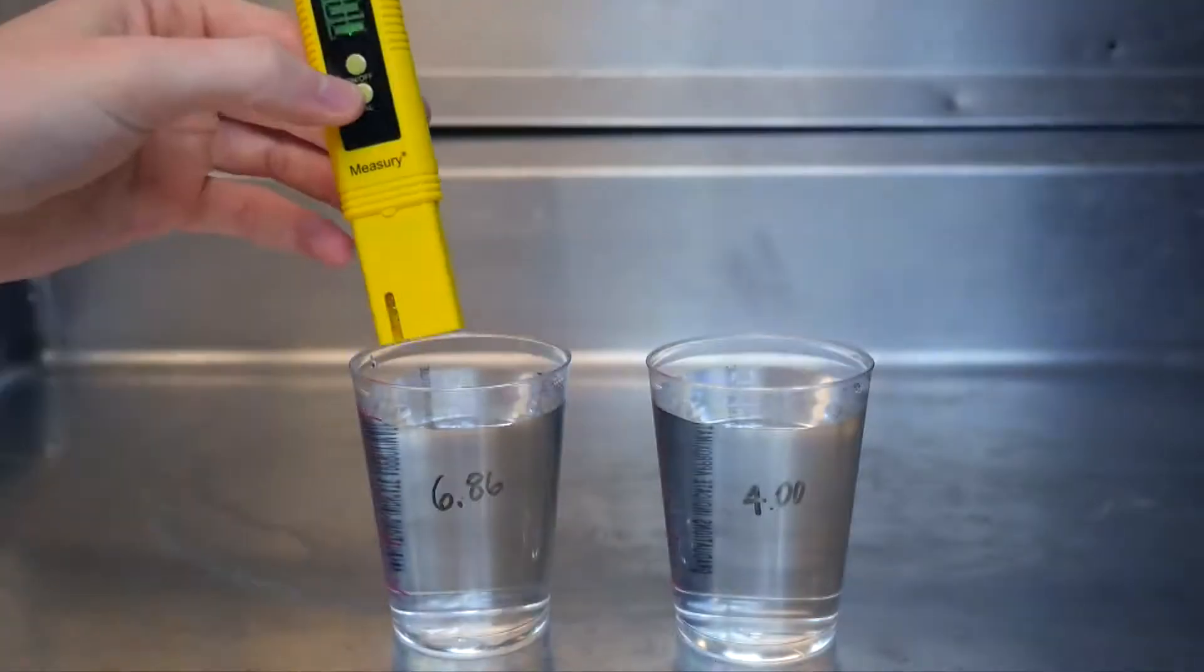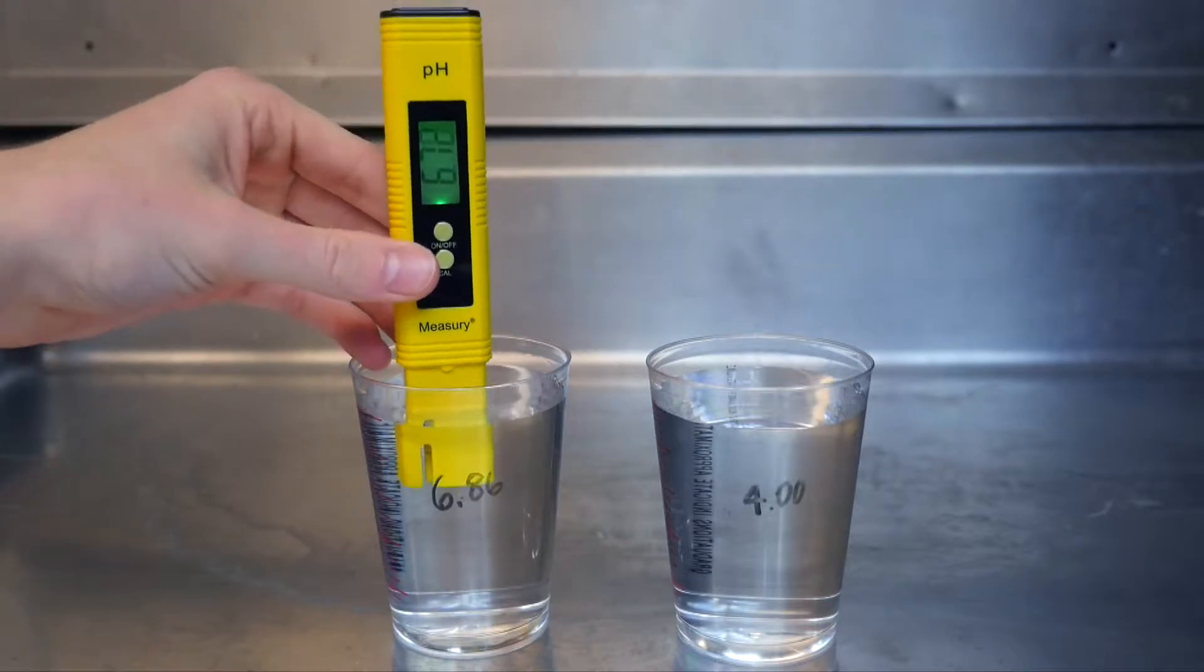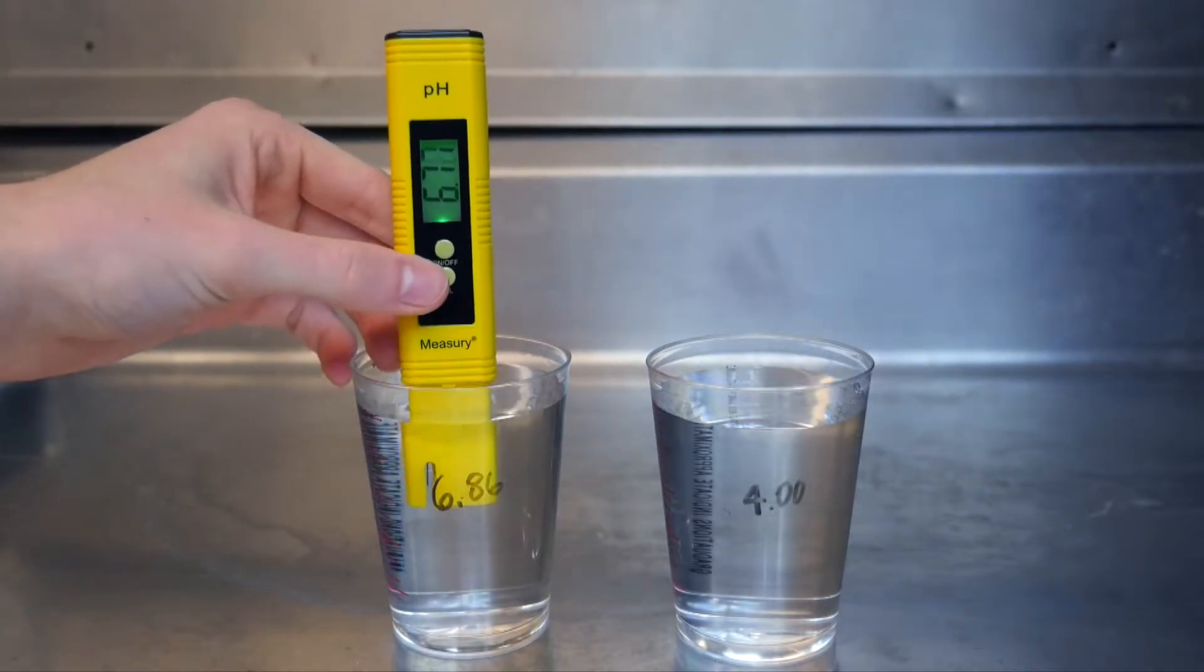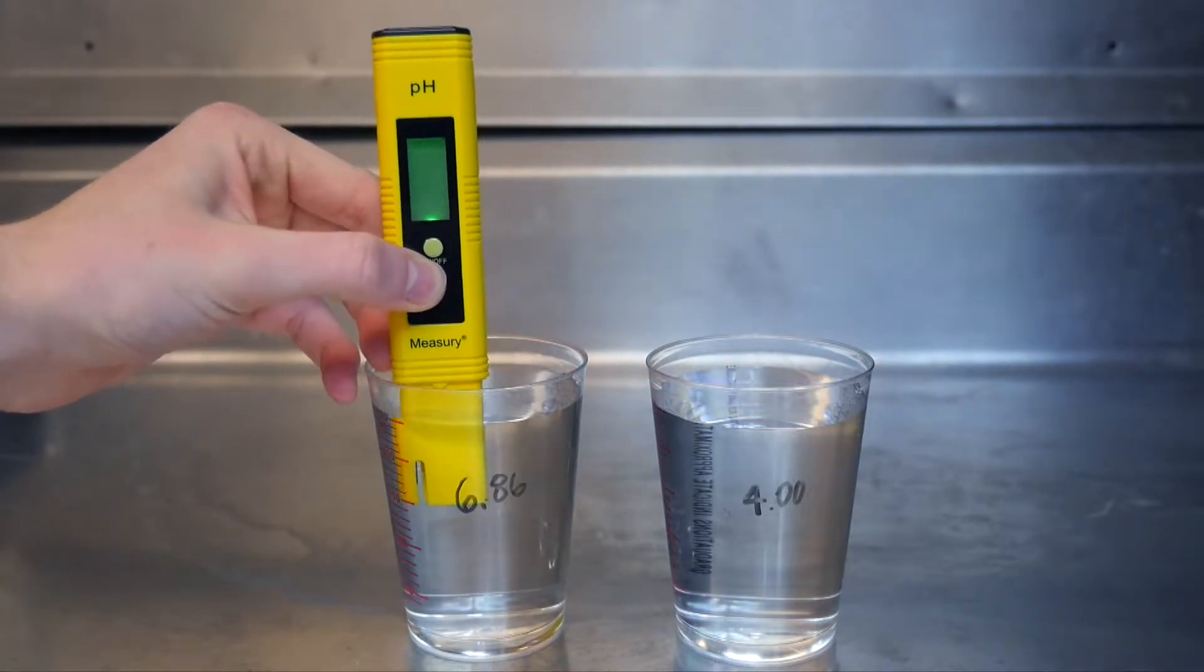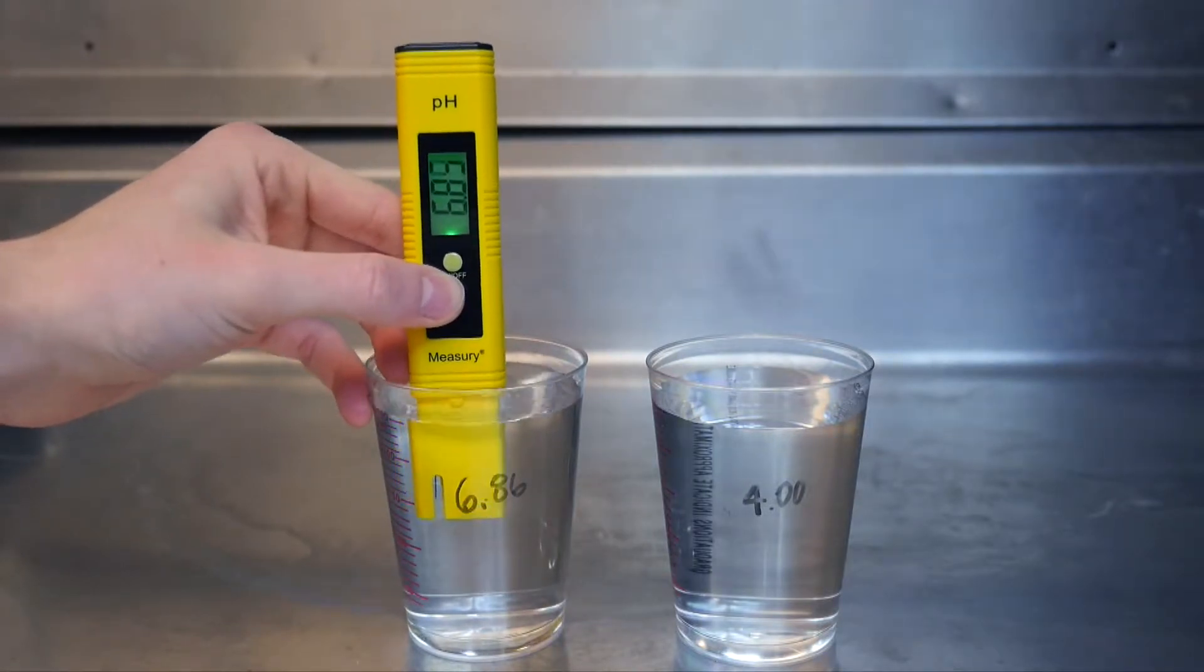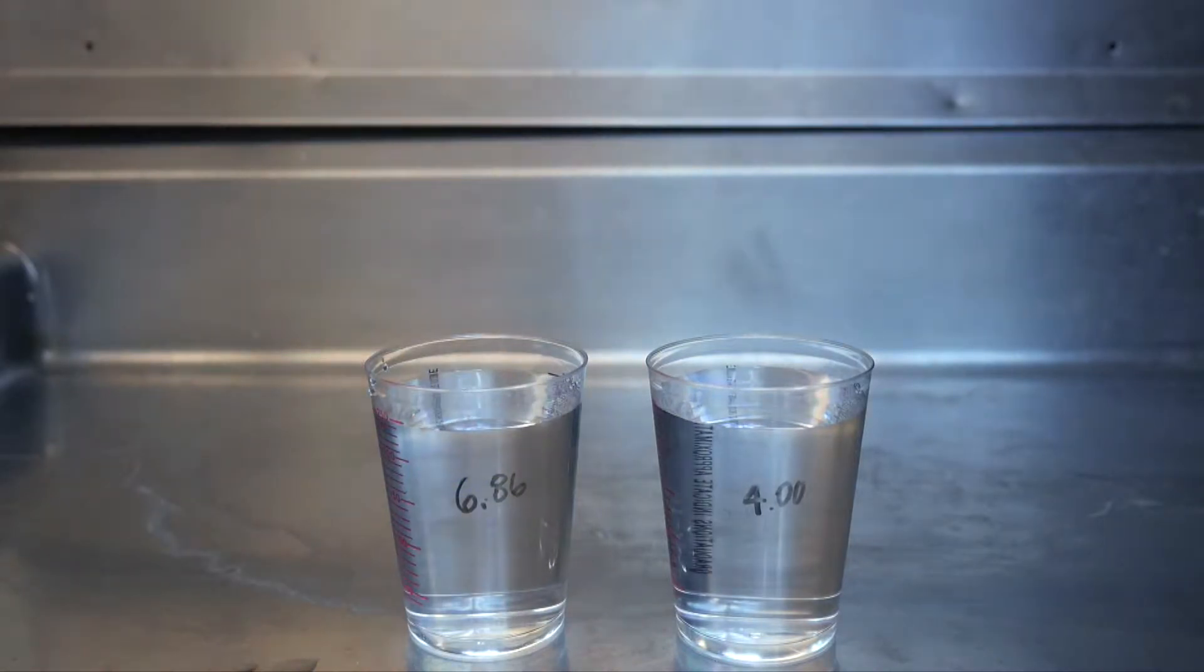Insert the meter's electrode into the 6.86 pH solution. Press and hold down the cal button for five seconds. After you release the button, 6.86 will flash on the display. Once it stops flashing, you can rinse the meter's electrode and move on to the next step.